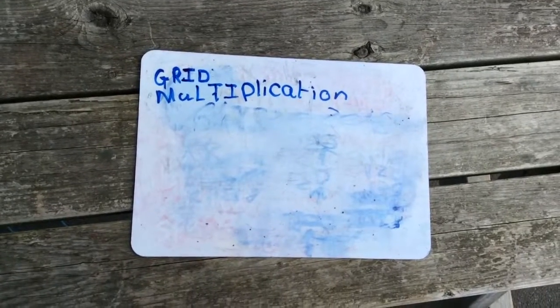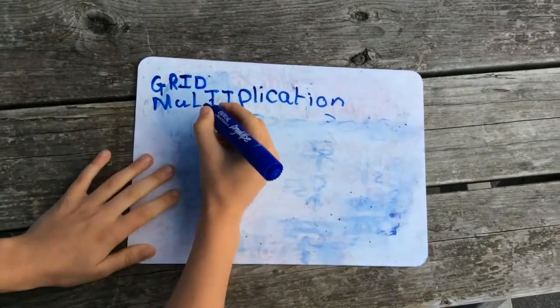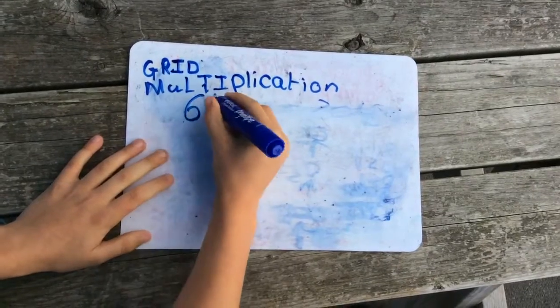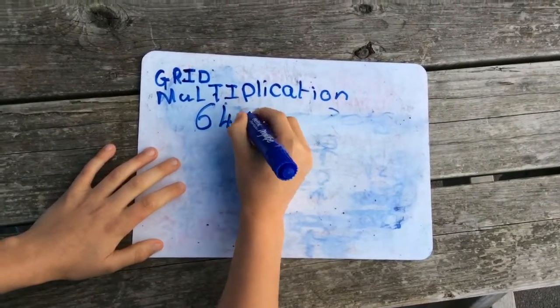Grid multiplication. So first of all, say for example you had the question 64 times 32.